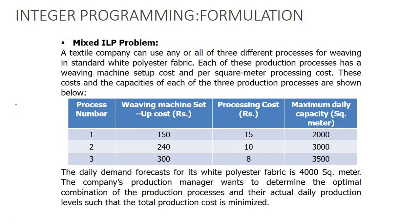Here is an example of a mixed integer linear programming problem. A textile company can use any or all of three different processes for weaving standard white polyester fabric. Each production process has a weaving machine setup cost and a per-square-meter processing cost. The daily demand forecast for white polyester fabric is 4,000 square meters. The company's production manager wants to determine the optimal combination of processes and their actual daily production levels such that the total production cost is minimized.